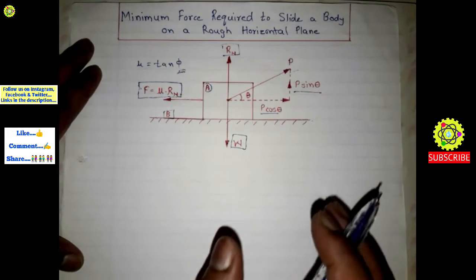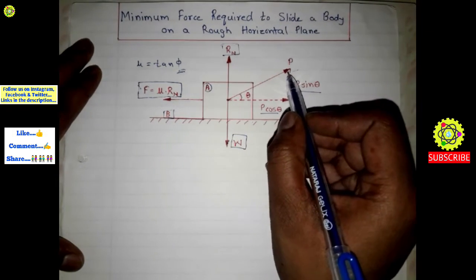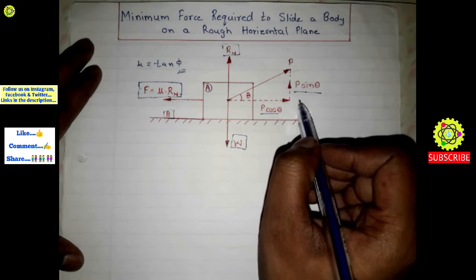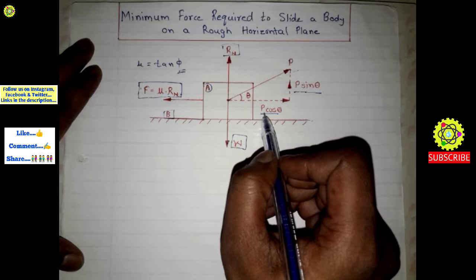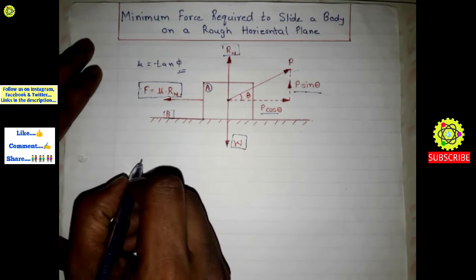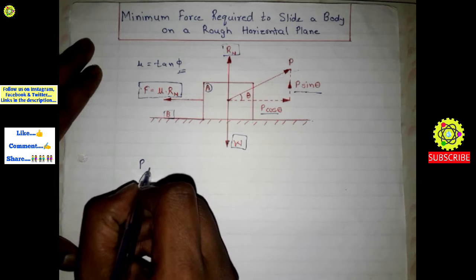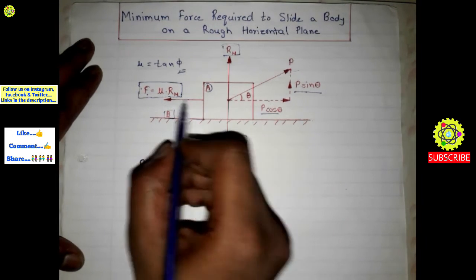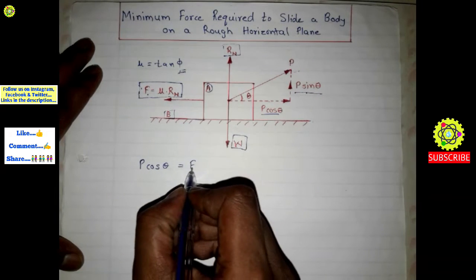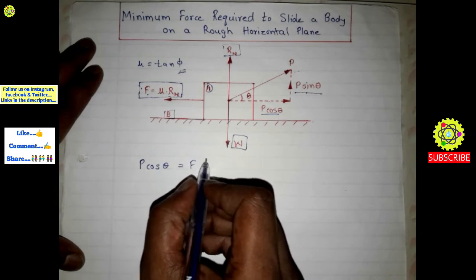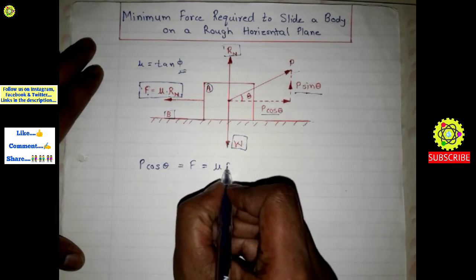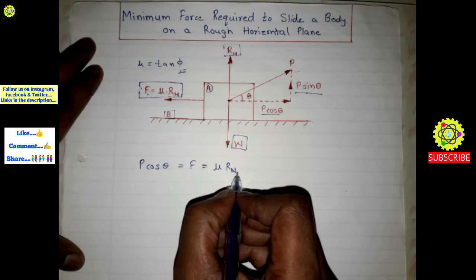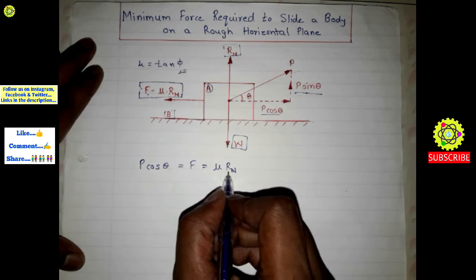Effort P has two resolved forces. P cos θ is equal to F, that is the frictional force, which is equal to μRn — μ is the coefficient of friction into normal reaction. We will now simplify this term.